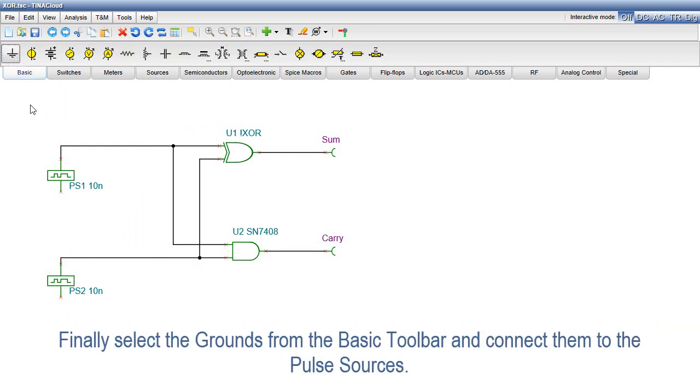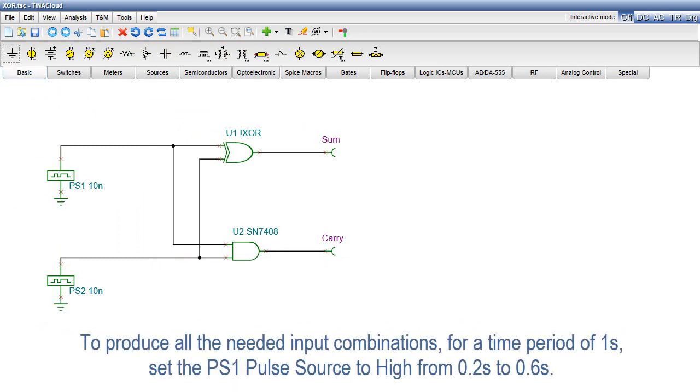Finally, select the grounds from the basic toolbar and connect them to the pulse sources. To produce all the needed input combinations, for a time period of one second, set the PS1 pulse source to high from 0.2 seconds to 0.6 seconds.